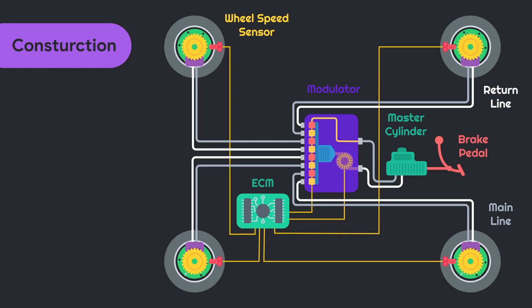Brake pedal is connected with master cylinder while brake light switch is also connected with the ECM. When driver applies the brake, with help of brake light connection, ECM detects the movement of brake pedal and determines the speed of vehicle with wheel speed sensors.